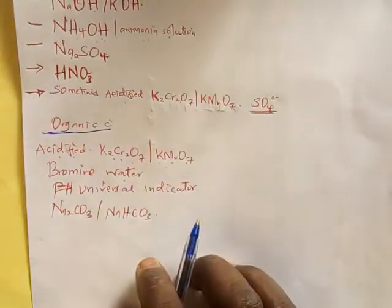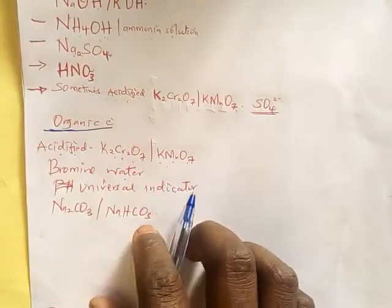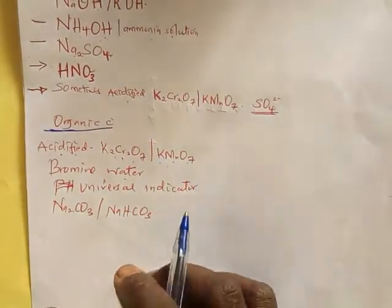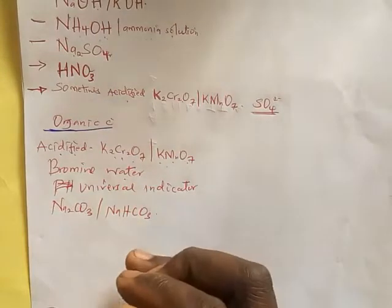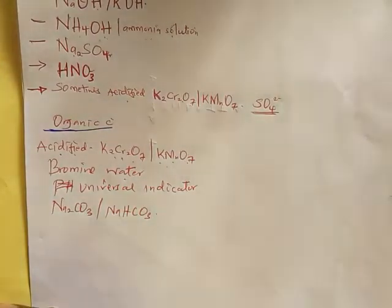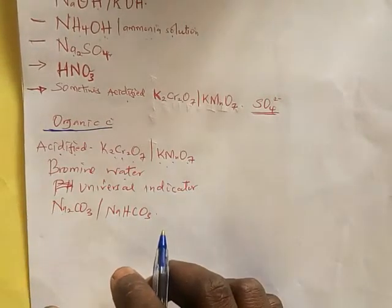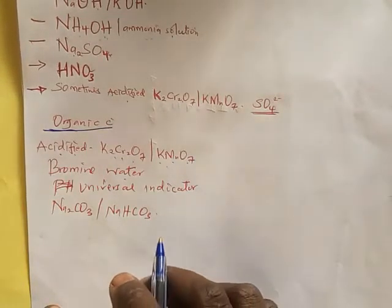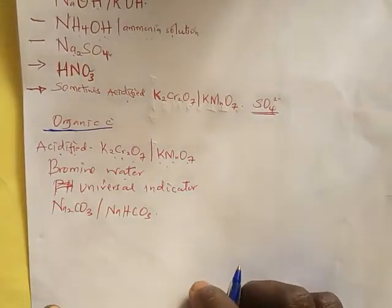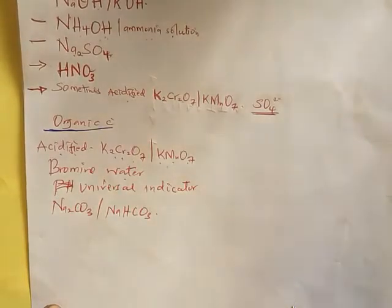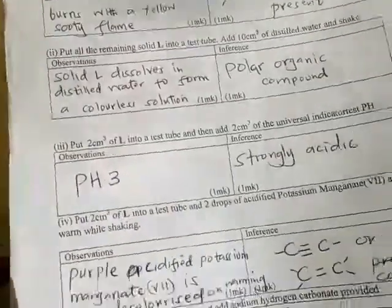When giving inferences for organic chemistry, you should know that it is either the double bond, the triple bond, a saturated compound, alcohols, or organic acids — like ethanoic acid or methanoic acid — that could be present. That is how you identify what you are dealing with.